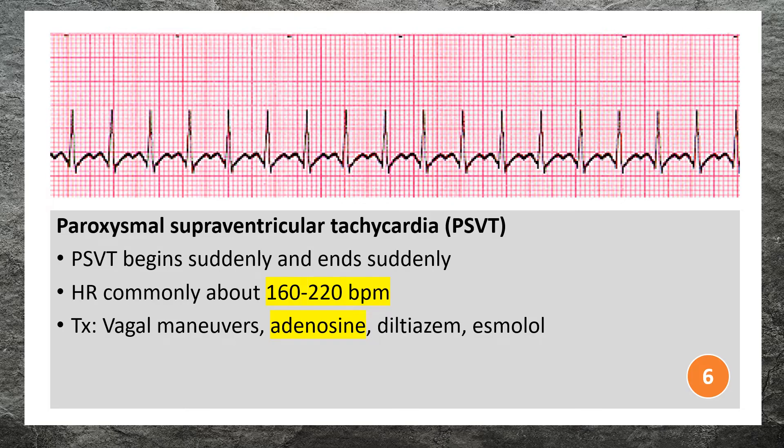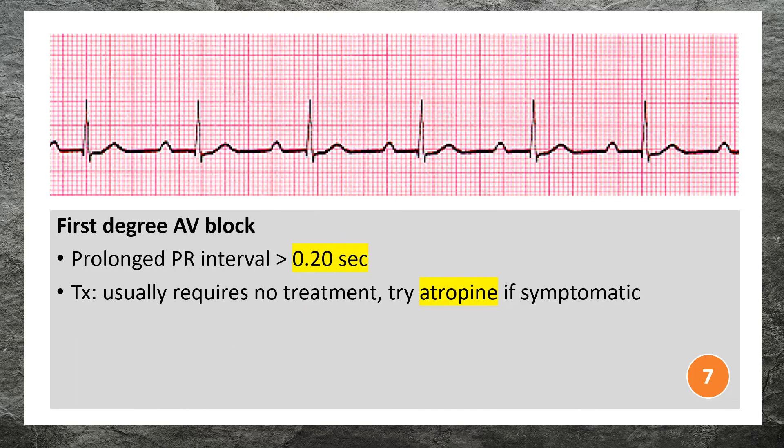Treatment options for PSVT include vagal maneuvers, adenosine, calcium channel blockers, and beta blockers. First degree AV block is characterized by a prolonged PR interval greater than 0.20 seconds.